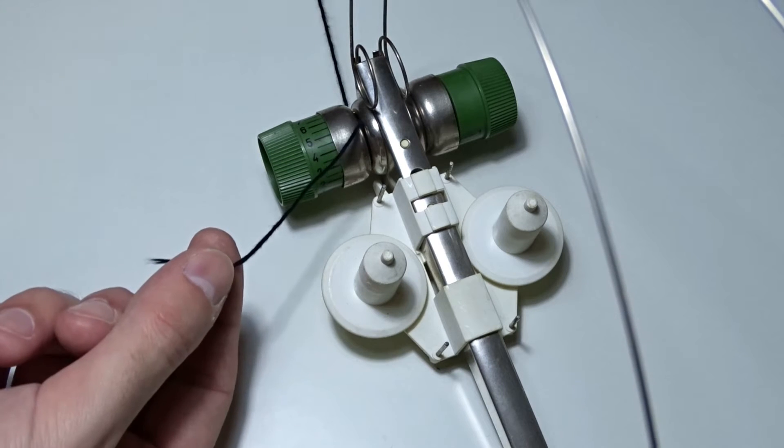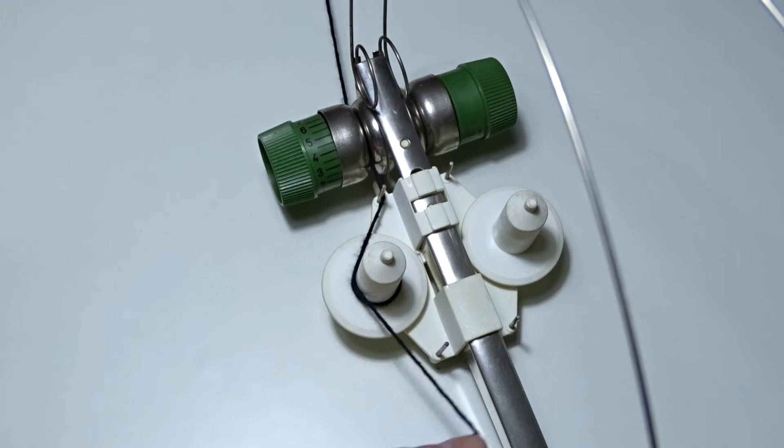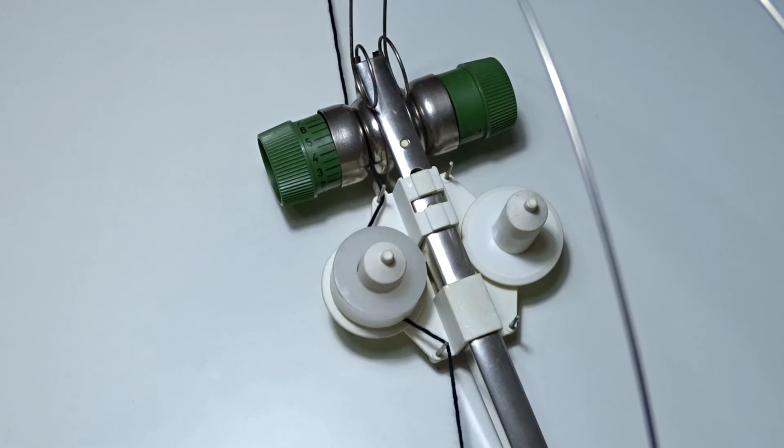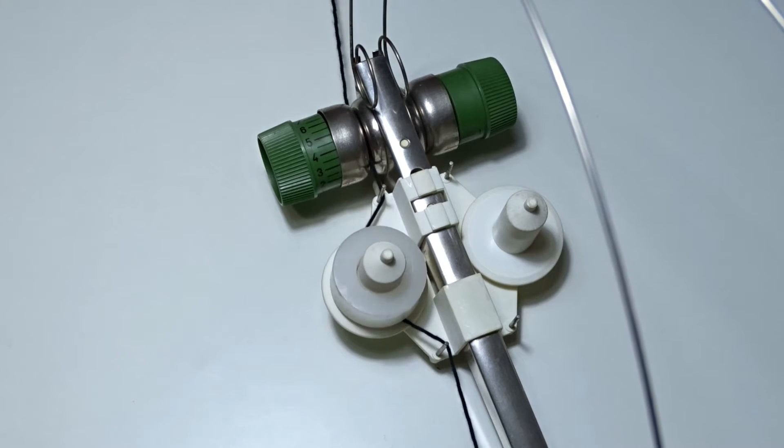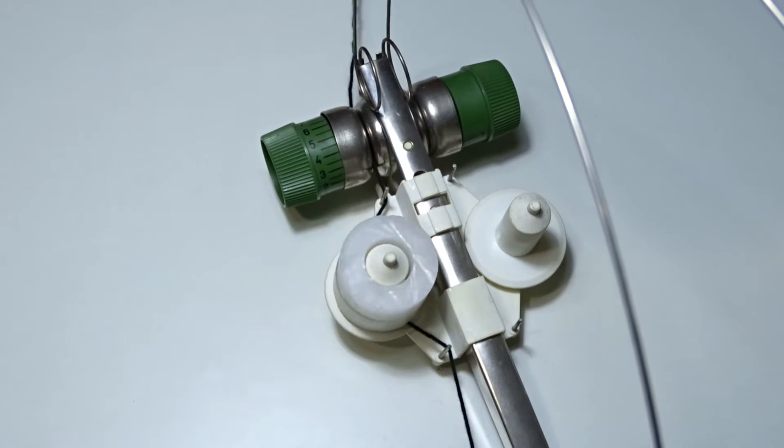If more paraffin is required on the yarn, twist the yarn around the paraffin ring holder. If even more paraffin is required, you can place a second paraffin ring on top of the first one.